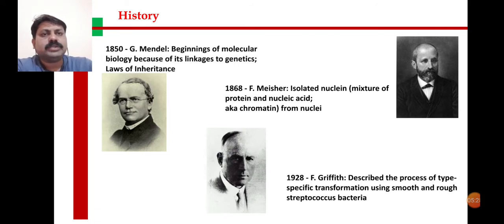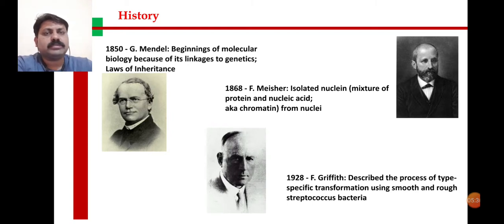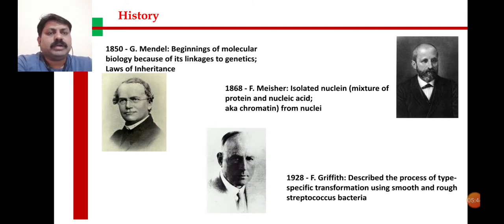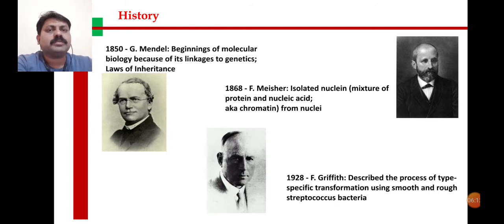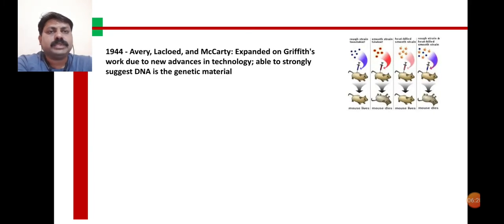From nuclein, proteins and nucleic acids were separated. These nucleic acids are ribonucleic acid (RNA) and deoxyribonucleic acid (DNA). The work was continued by Frederick Griffith, who proposed the transformation experiment in 1928. He proposed that something present in the cell or nucleus carries and transforms information from parent to next generation — this was the foundation for the discovery of DNA.